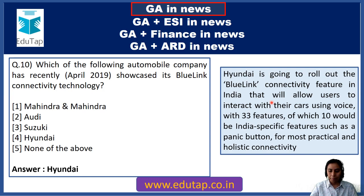Question 21: Which of the following organizations or companies has recently received a license from the Department of Telecommunications to provide internet and mobile services on flights? The answer is BSNL. The state-run BSNL has got this license. BSNL has its own satellite partner called Inmarsat, and they have received this license to provide internet and mobile facilities on board.